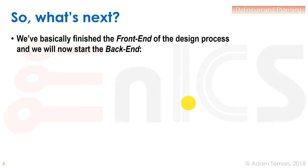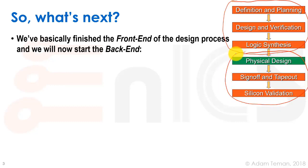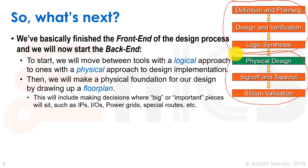We've basically finished the front end of the design process and we'll now start the back end of the design. The front end was where we defined all the logic and how we're going to build our chip. The back end is more associated with making the metal layers, or the connections between the different cells, which is done at the back end of the line, versus the front end where we defined our logic associated with the transistors.